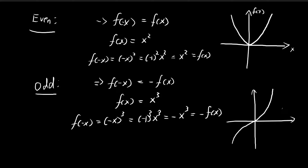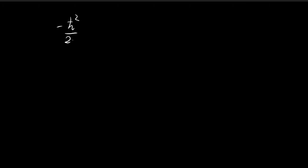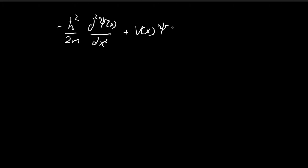With these definitions out of the way, let's get to the problem. We're given that we have a potential that is an even function. Let's say we have a solution to the time-independent Schrödinger equation called ξ(x). If ξ(x) is a solution, then we know that this equation must be true.